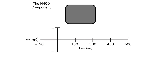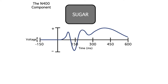In this paradigm, sentences are presented visually, one word at a time, while the EEG is being recorded. Subjects just read the sentences. For example, the subject might see a sentence like, I take my coffee with cream and sugar. This is the ERP waveform elicited by the word sugar at the end of the sentence.